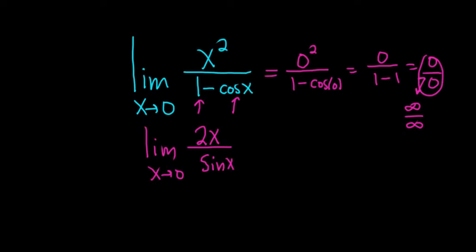Oh, this is interesting because if we plug in 0 again, we end up with 2 times 0 over sine of 0. So we end up with 0 over 0, so it happened again. So we still have an indeterminate form 0 over 0.